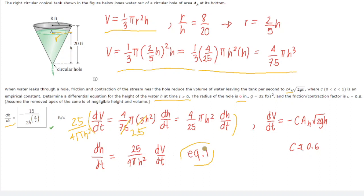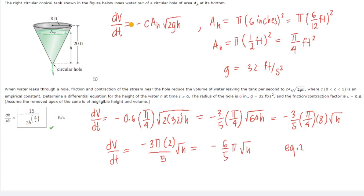Now let's find Equation 2, which we'll substitute into Equation 1 to find dh/dt in terms of h. Our dV/dt is the volume flow rate of water leaving the tank: C·A_h·√(2gh). Take note that we have a negative sign here since the water is leaking out of the tank. If water were entering the tank, we would use a positive sign. But since it's leaking out, dV/dt = −C·A_h·√(2gh).